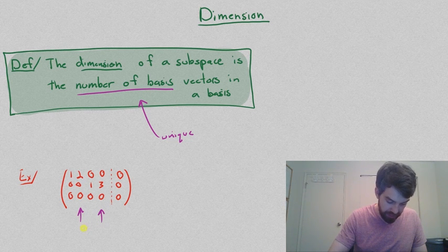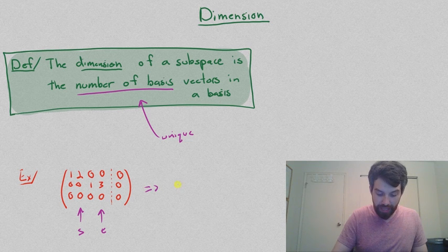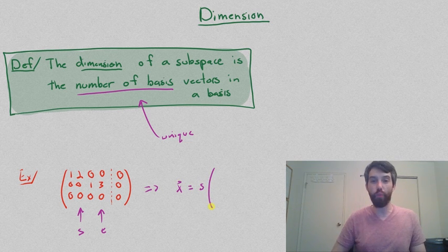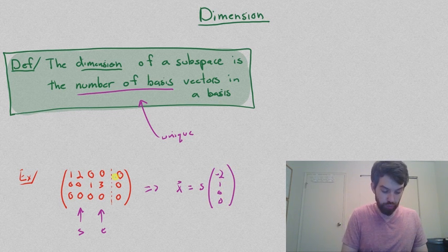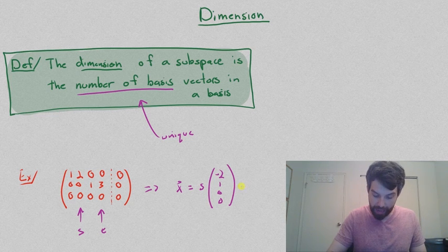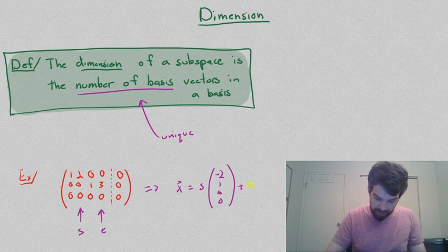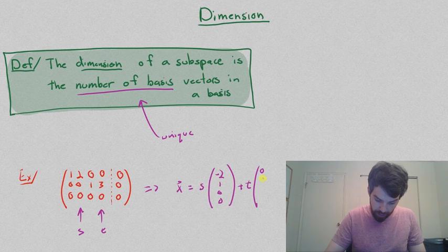As we've seen before, the process when solving this is to put an S and put a T in those free columns. And what we're going to get out of it is that the vector X is going to be S times one vector. That's going to be the minus 2, 1, 0, 0. I can just read off the top row to determine that. And then reading off of the second row, I'm going to get T, nothing in the first components, a minus 3 in the third, and a 1.